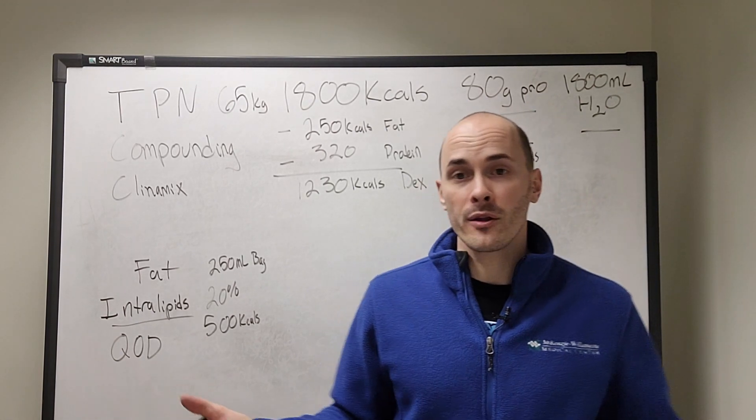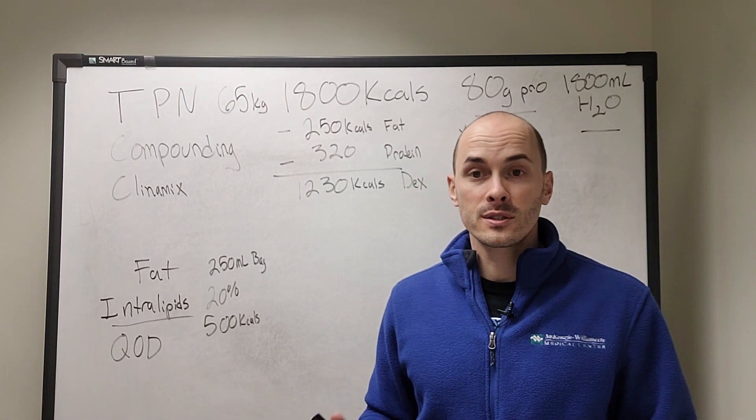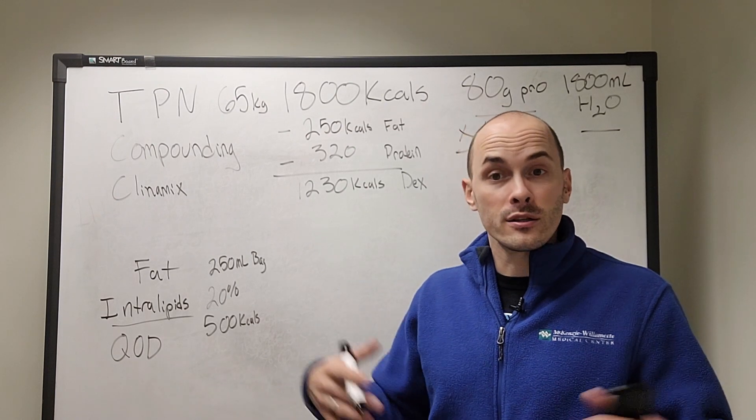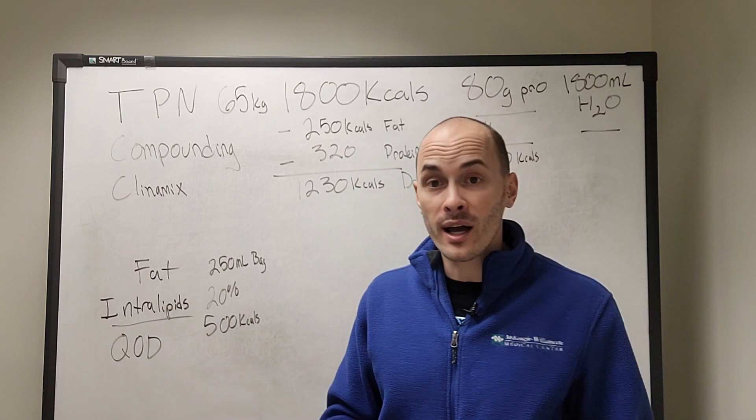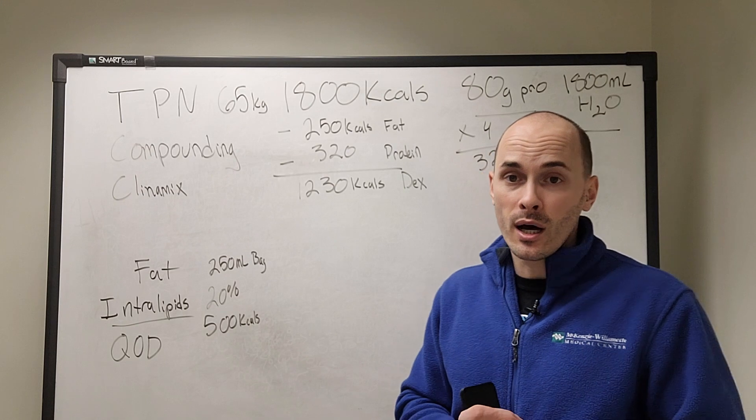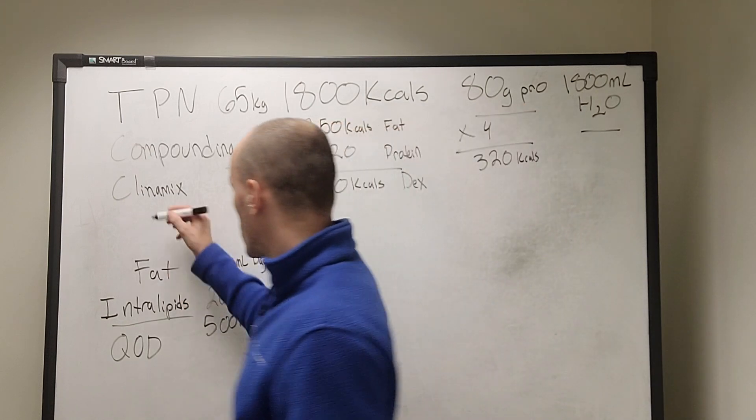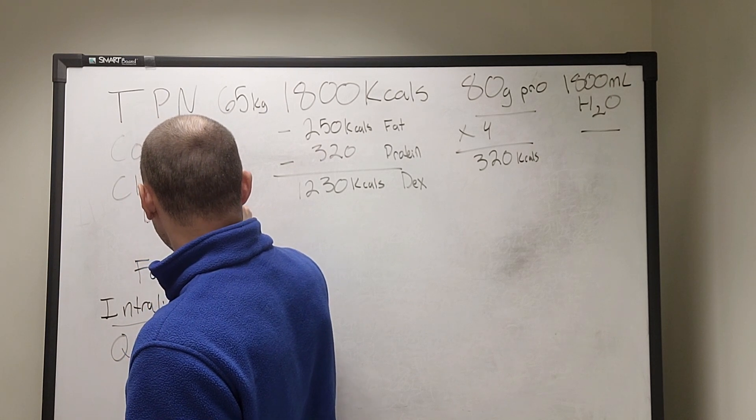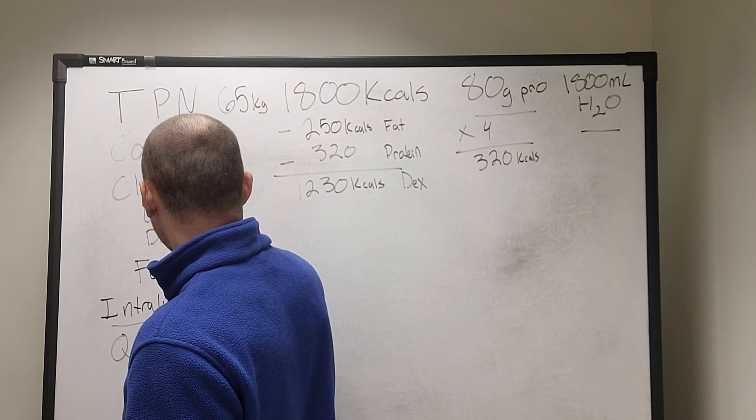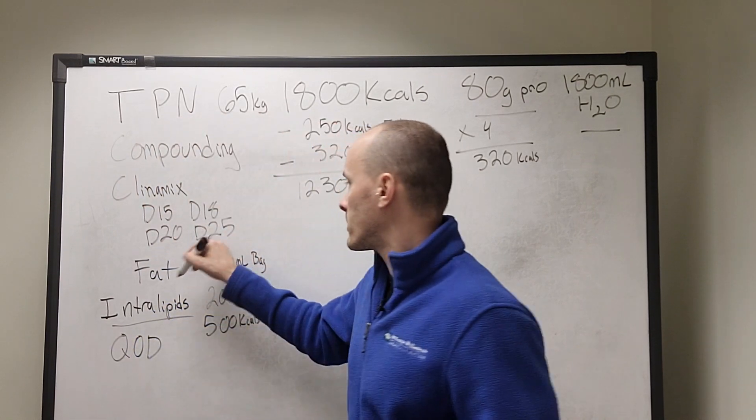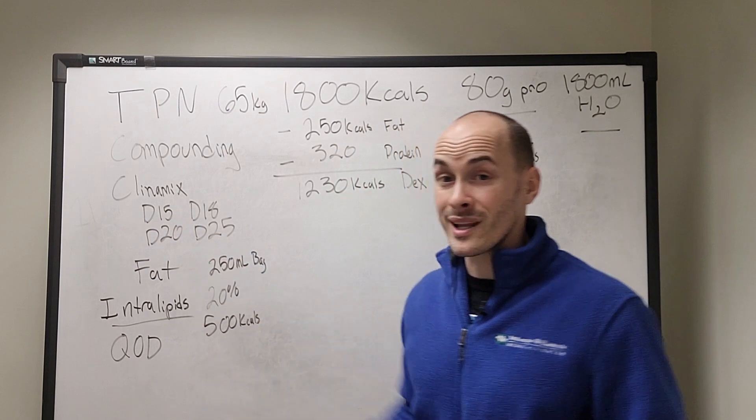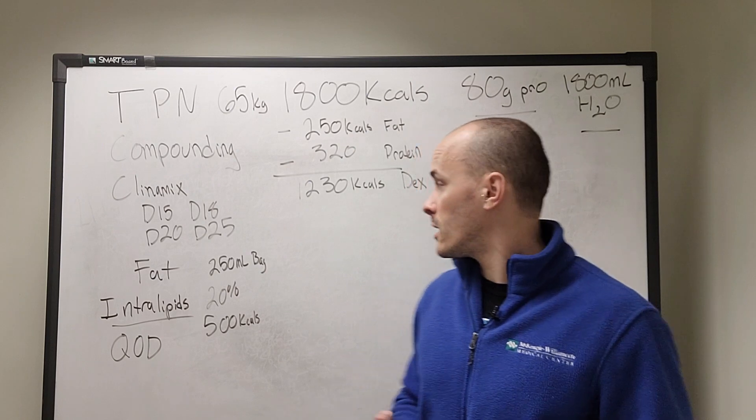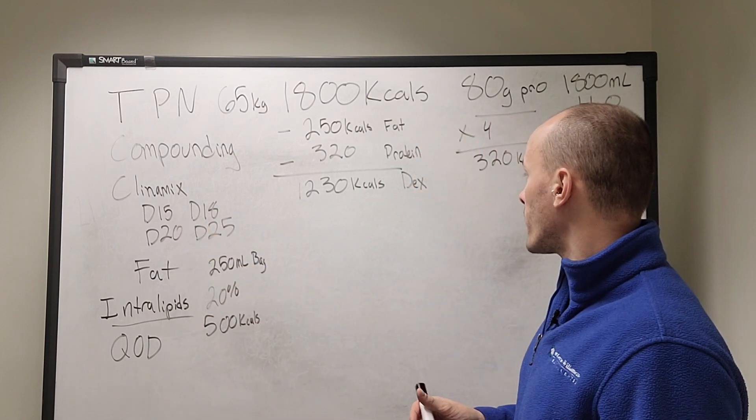Now if you remember any of my other IV or hydration videos, there's dextrose containing IV fluids. There's D5, there's D10, there's D15, D20, D25. My understanding with compounding is you try and get it close to the typical D15. I believe there's also a D18, D20. You try and get it as close to some of these 15, 20, 25 mark. So this is a percent dextrose containing fluid and you try and get as close as possible.